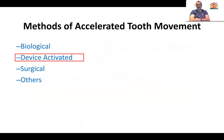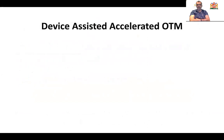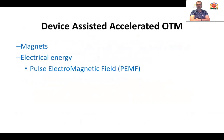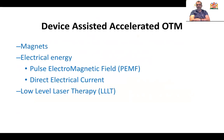What about device-activated ways to accelerate tooth movement? In general, there are many devices used to assist in accelerating tooth movements, such as magnets, electrical energy — which is subclassified into pulsed electromagnetic field devices and direct electrical current devices — as well as low-level laser therapy, which has been used significantly in the last decade, and finally resonance vibration, including acceledent.